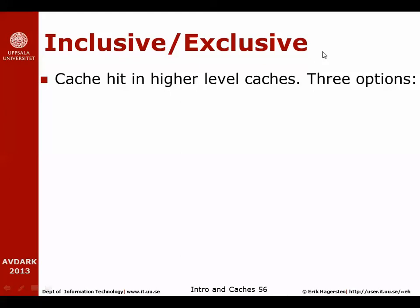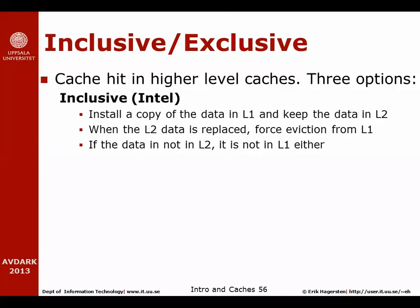An important property in multi-level caches is how much data is replicated between levels. There are at least three options. In inclusive caches — used by Intel for a long period — whenever you hit in L2, you install a copy of the data in L1 but keep it in L2 as well. Whenever data in L2 is replaced, we force an eviction from L1 too. The invariant is: if data is not in L2, it's definitely not in L1 either. If data is in both L2 and L1 and we replace it from L1, we keep it in L2.